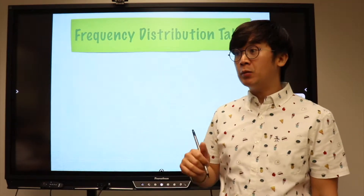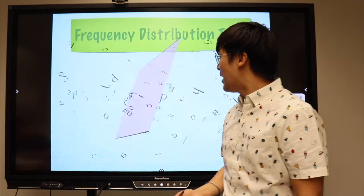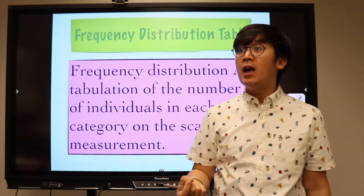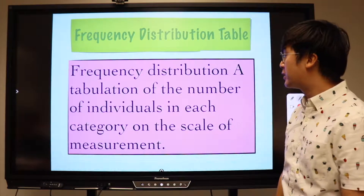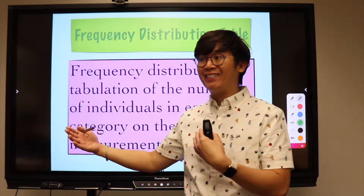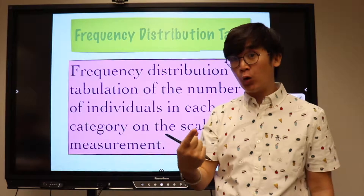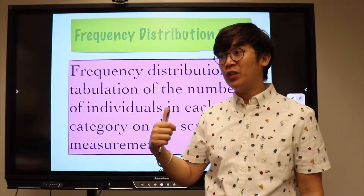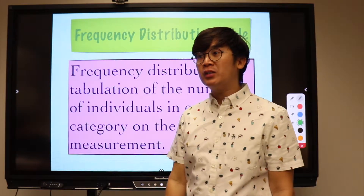A frequency distribution table is one way on how we organize an unorganized number set or data set. It's basically counting the number of frequency — that's why it's called a frequency distribution table — on how many times a certain data set appeared in your sample. After working on the frequency distribution table, we're going to represent those numbers in graph form. We are going to be working on two graphs: the histogram or frequency graph, and the ogive or the relative cumulative frequency graph.